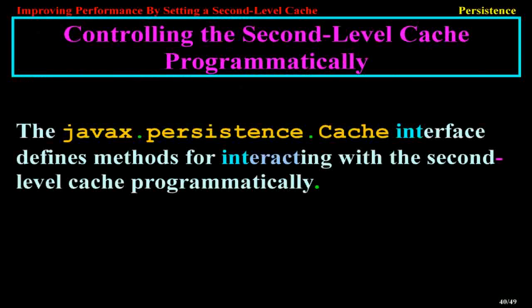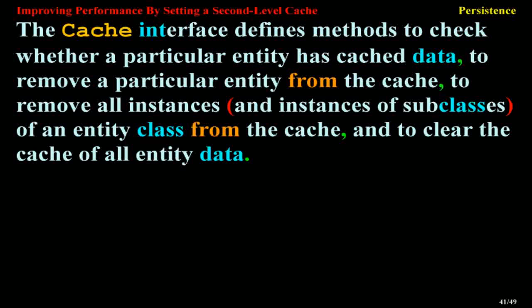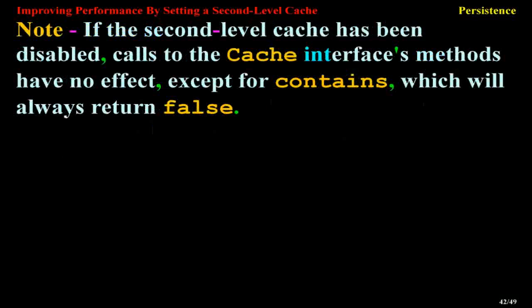Controlling the Second-Level Cache Programmatically. The javax.persistence.Cache interface defines methods for interacting with the second-level cache programmatically. The Cache interface defines methods to check whether a particular entity has cached data, to remove a particular entity from the cache, to remove all instances and instances of subclasses of an entity class from the cache, and to clear the cache of all entity data. Note: If the second-level cache has been disabled, calls to the Cache interface's methods have no effect, except for contains, which will always return false.